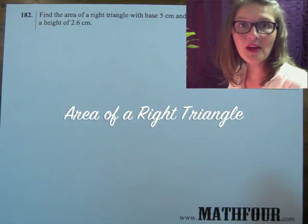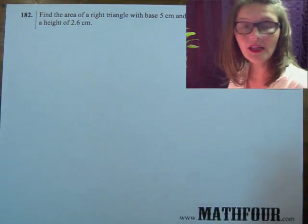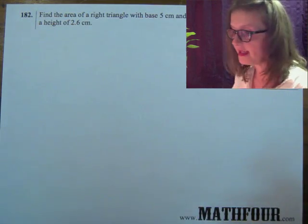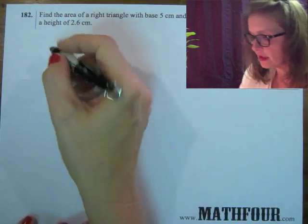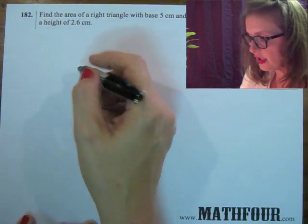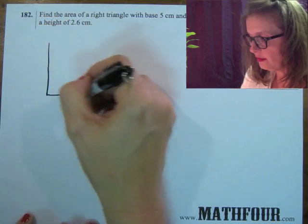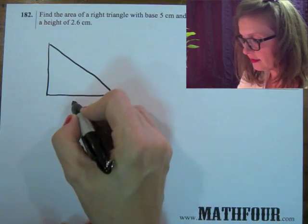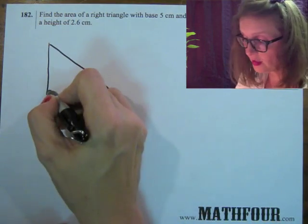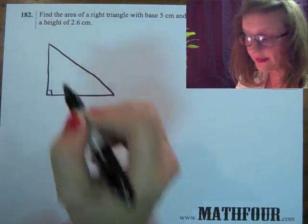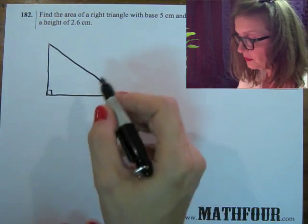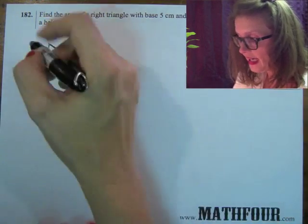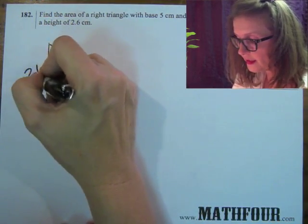Hi there, I'm Bon Crowder with Math4.com, here talking about the area of a right triangle given the base and the height. So let's look. We have a right triangle — a right triangle has a little right angle right there, and that's what makes it a right triangle. The base is 5 centimeters and the height is 2.6 centimeters.